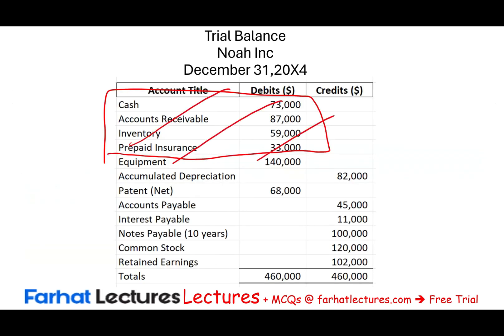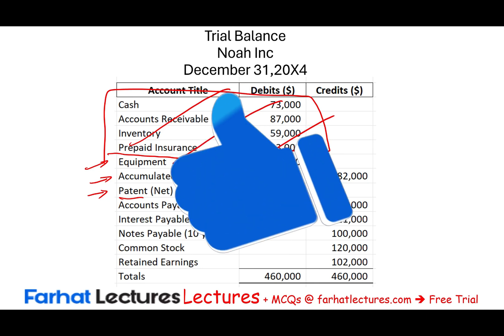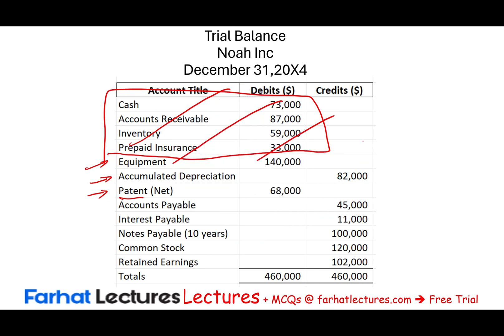Next we have non-current assets. We have equipment, accumulated depreciation, and a patent net of amortization. So here we list equipment along with accumulated depreciation.